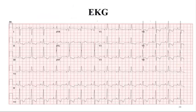Classic EKG in one of our patients shows incomplete right bundle branch block, RV strain, T-wave depression, right axis deviation, and prominent P-wave (P pulmonale). All of these are signs of right ventricular strain and can be seen in pulmonary hypertension.